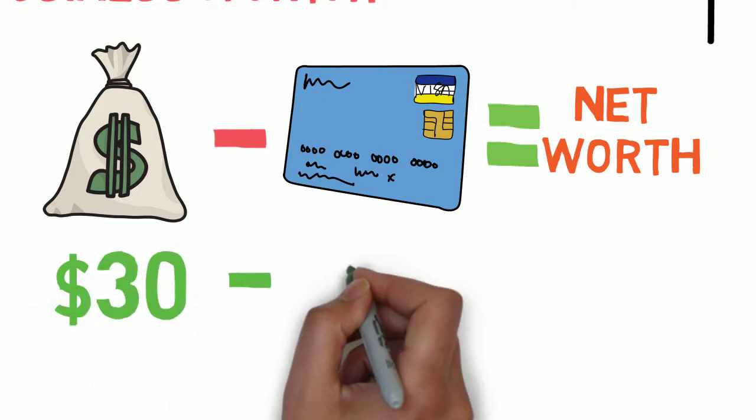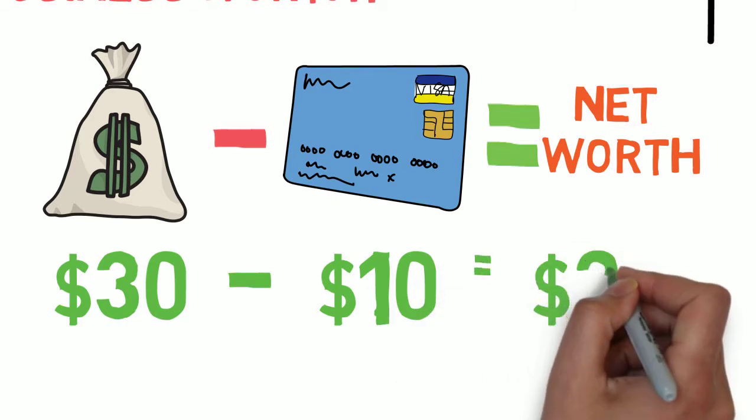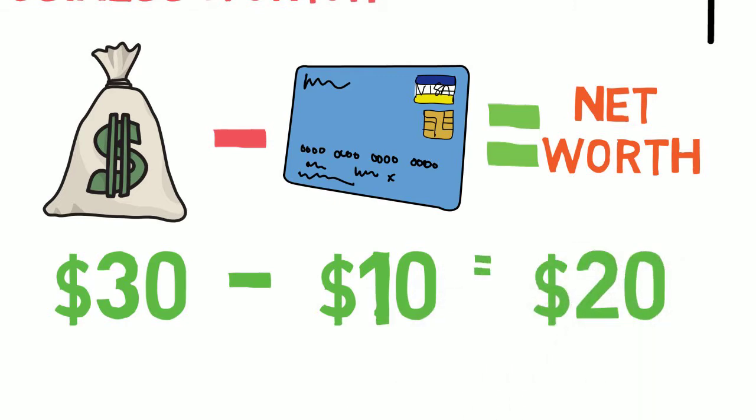So if we were to take our previous example, $30 in assets minus $10 in liabilities equals $20 net worth for our entire business.